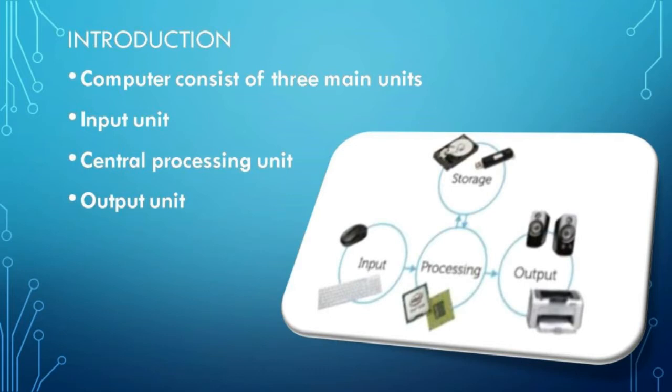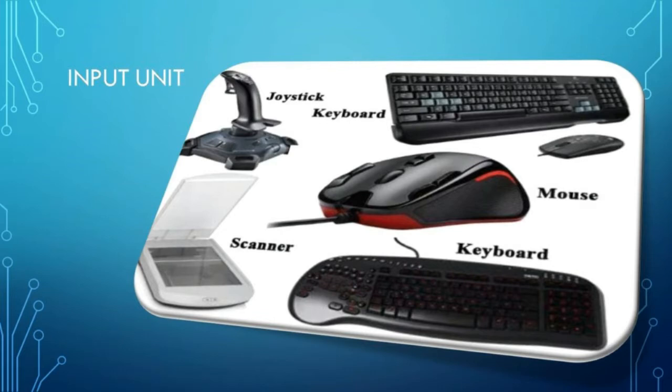Computer consists of three main units namely input unit, central processing unit and output unit. The input unit is a means of communication between the computer and the user. To solve any problem, a set of instructions and data are fed into the computer through this unit. These instructions are converted into a series of electronic pulses which the computer can understand and later sent to the central processing unit. Some of the commonly used input devices are keyboard and mouse.